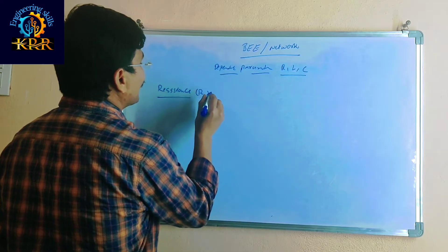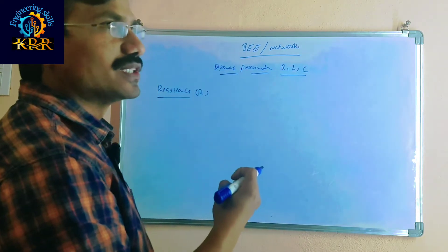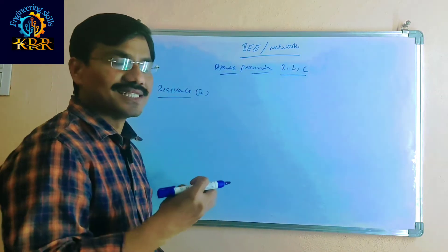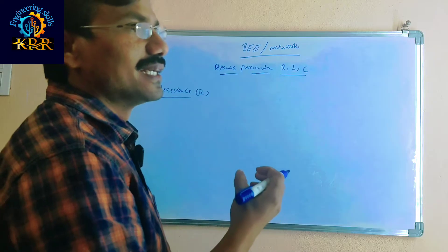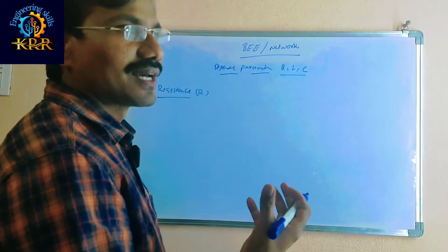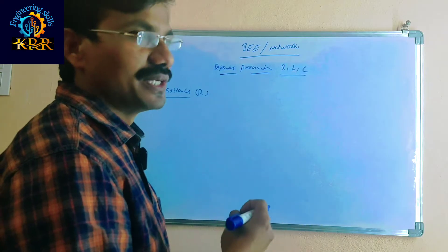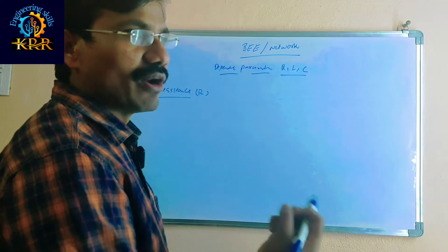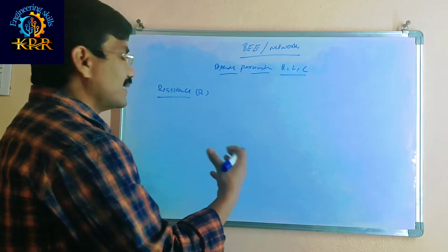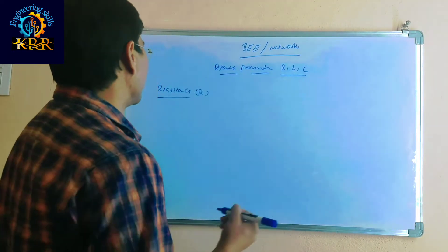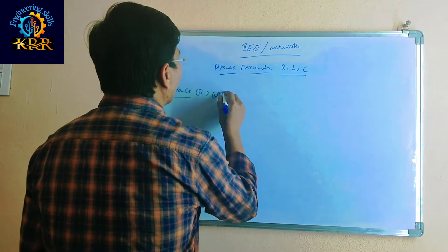If we go for the resistor, what is the resistor doing? The resistor is dissipation of power — it will consume the power and give a corresponding output. If it is a light, it gives illumination; if it is a heater, it gives heating. It takes power and gives output — dissipation of energy. The unit of resistance is called Ohms.